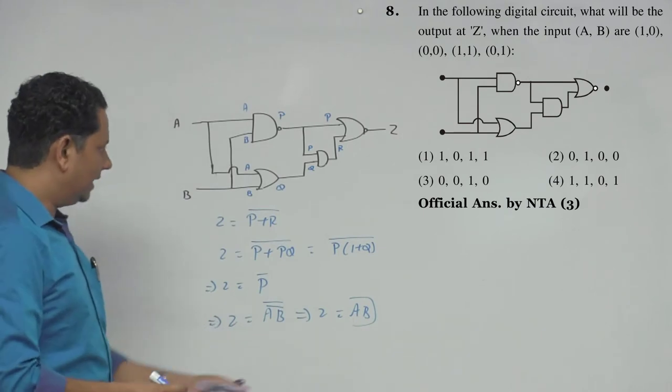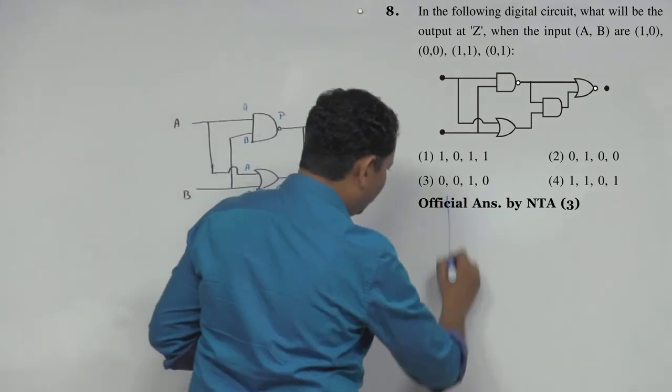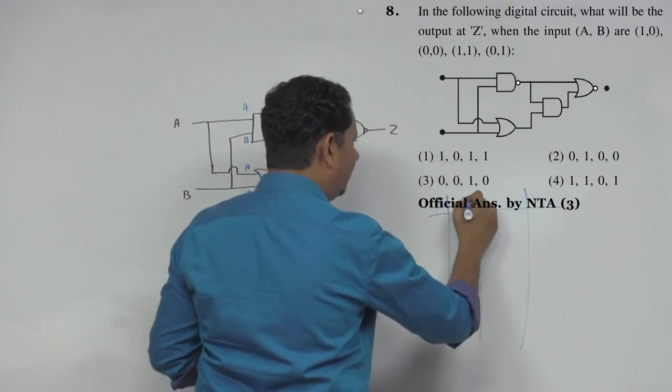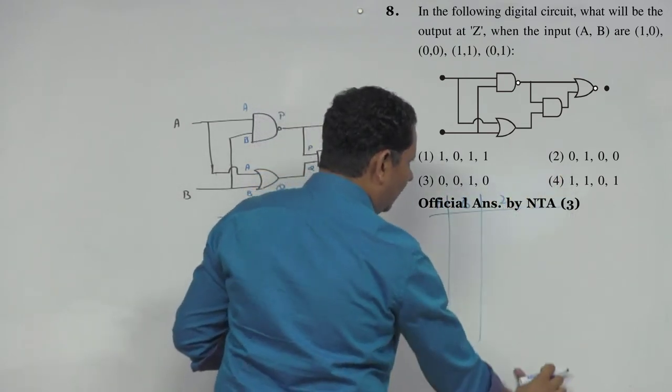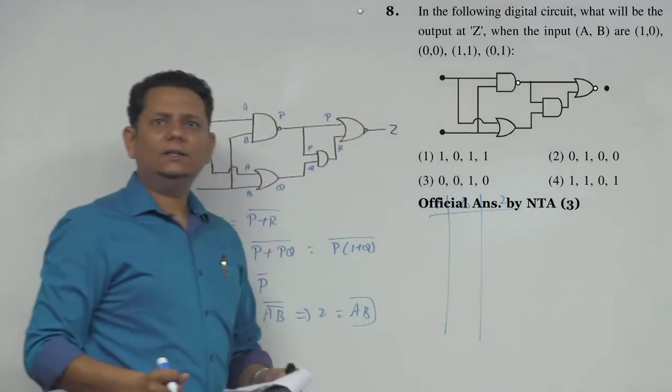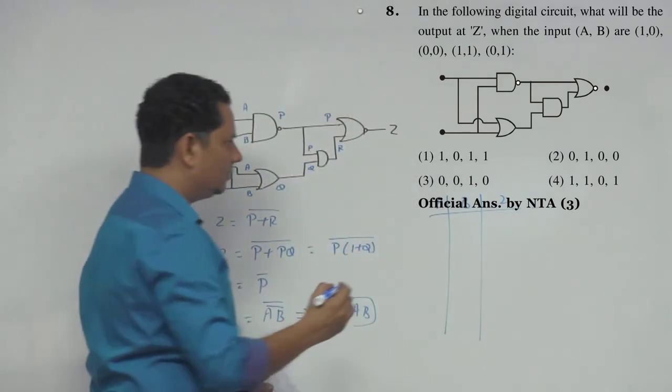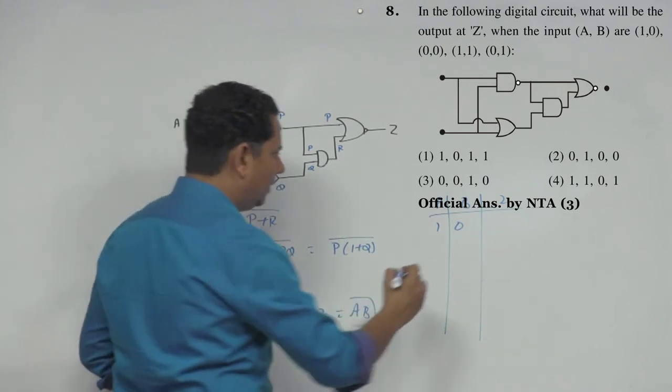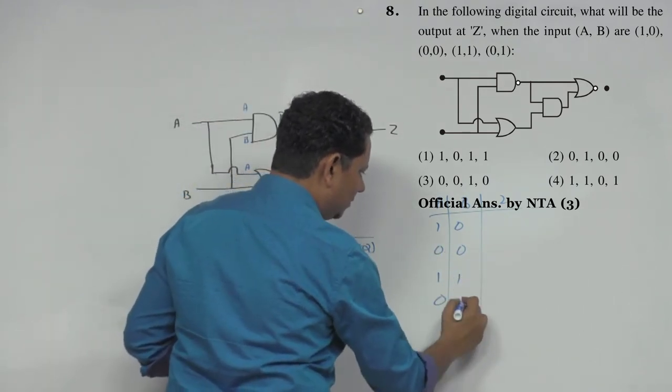We have very simple, so I will make a truth table. Let's say this is A, this is B, and this is Z. We have the data that was given here, so this is 1,0, then 0,0, 1,1, and 0,1.